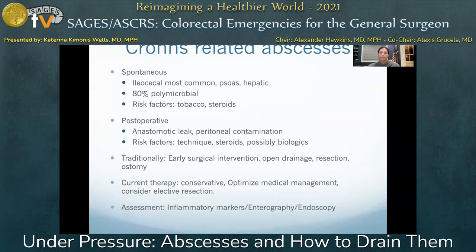Traditionally, management strategies involved early surgical intervention with open drainage, extended resection, and often ostomy given the friability of acutely infected tissue. Current management is far more conservative, with antibiotics with or without percutaneous drainage, and assessment of underlying disease activity with both enterography and endoscopy. Success of initial treatment by percutaneous drainage allows for avoidance of early surgery in up to 14 to 85% of patients.